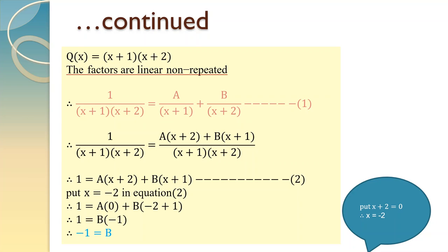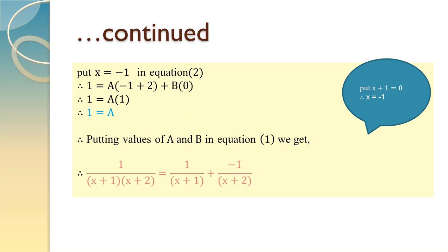One of the factors is x plus 2 equated to 0, so we get the value of x as minus 2. Let us put x equal to minus 2 in equation 2. We get A into 0 plus B into minus 1, hence the value of B is minus 1. One more factor was x plus 1 equated to 0, so x is equal to minus 1. Substituting in equation 2, we get 1 equal to A into 1 plus B into 0, therefore the value of A is 1. Now putting the obtained values of A and B in equation 1, the fraction 1 upon x plus 1 into x plus 2 equals 1 upon x plus 1 plus minus 1 upon x plus 2. So we have decomposed our fraction into partial fractions.